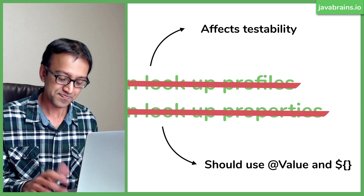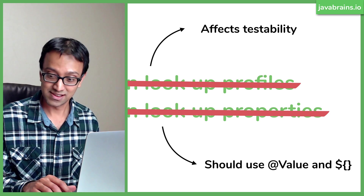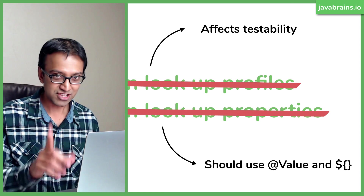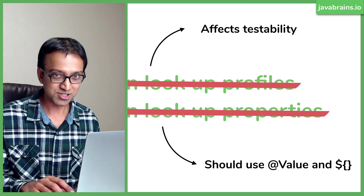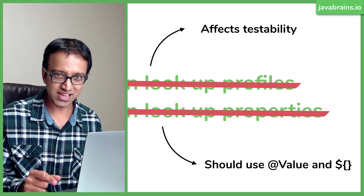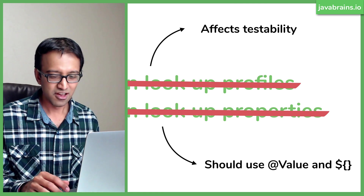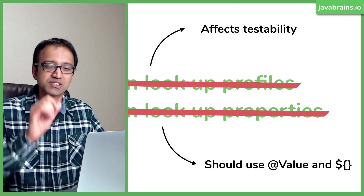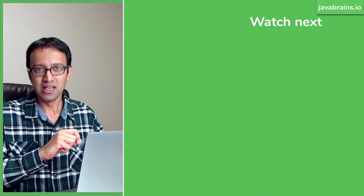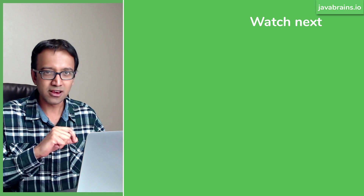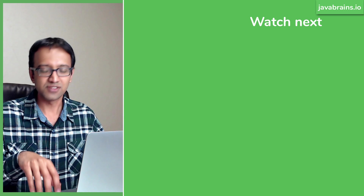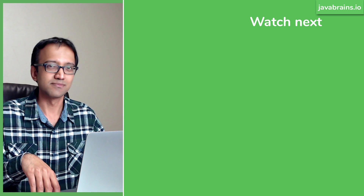So this is Environment. While Environment is something you shouldn't use, the next tutorial I'm going to tell you something that you should use and which we will be using in the rest of this series — which is a Spring Cloud Config Server. I'll tell you what the Spring Cloud Config Server is and why you should be using it. So check out the next tutorial. See you there.